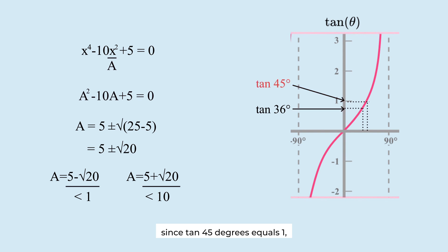Since tangent 45 degrees equals 1, the value of tangent 36 must be less than 1. Therefore, the square of this value must also be less than 1. As a result, a must be this value.